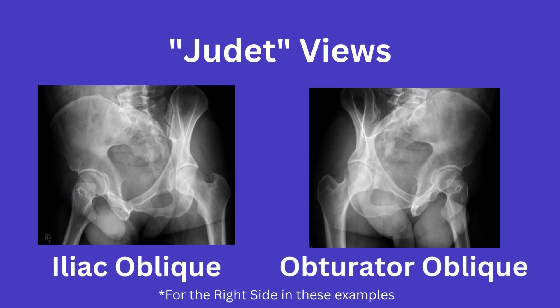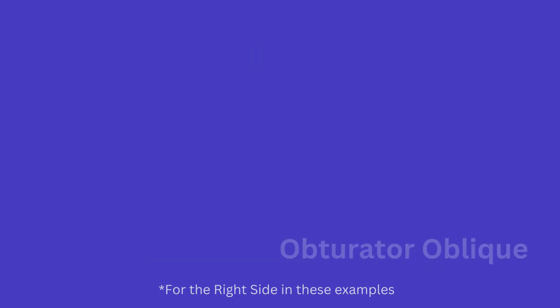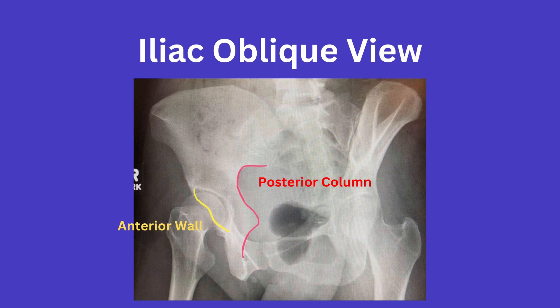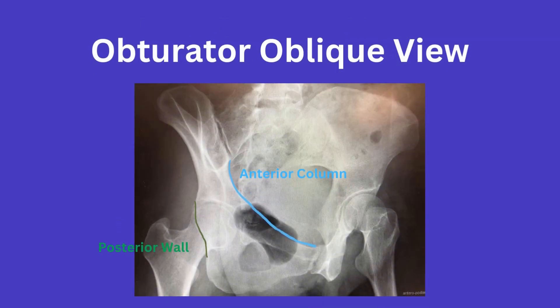X-ray views that you will want to be familiar with can be seen here. These are colloquially referred to as the Judet views — the two oblique views of the pelvis, including the iliac oblique and the obturator oblique views. On the iliac oblique view, you can best appreciate the posterior column and the anterior acetabular wall. The obturator oblique view gives you a better view of the anterior column and the posterior acetabular wall, as outlined here.